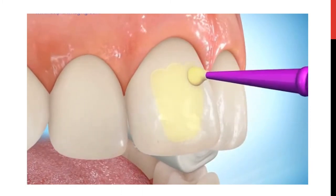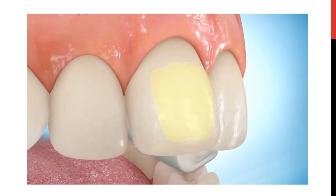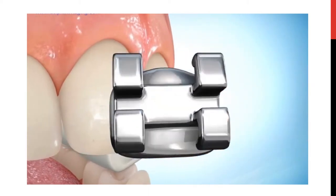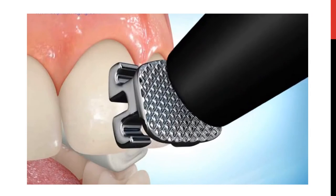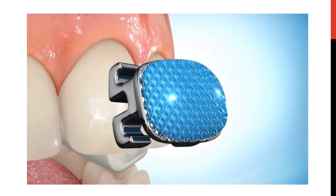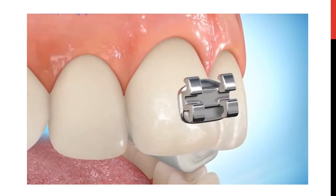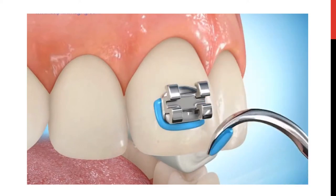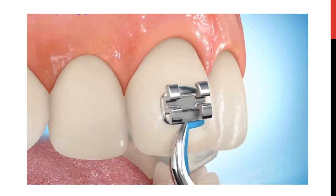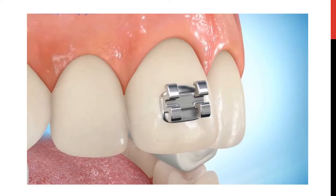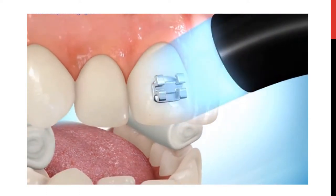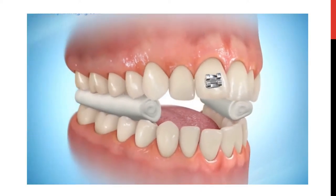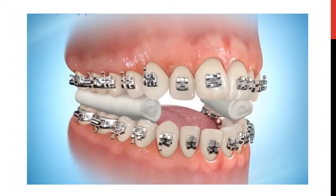Then applying unfilled primer, or applying self-etching primer as in this video. Then we place composite resin on the bracket base, position the bracket on the tooth crown properly, remove the excess composite from around the bracket base, and cure the composite. The process is repeated for all the teeth.